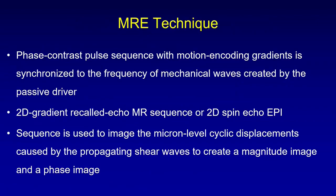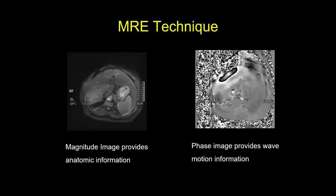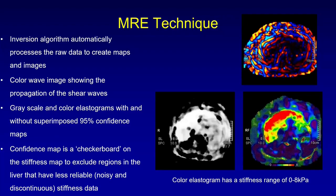A phase contrast pulse sequence with motion encoding gradients is synchronized to the frequency of the mechanical waves created by the passive driver. You can use a 2D gradient recalled echo MR sequence, typically at 1.5 Tesla, or a 2D spin echo planar imaging sequence. This images the micron-level cyclic displacement caused by propagating shear waves to create a magnitude image and a phase image. The magnitude image is an anatomical image showing all tissues at each acquired section level, useful for ROI planning. The phase image provides the wave motion information.